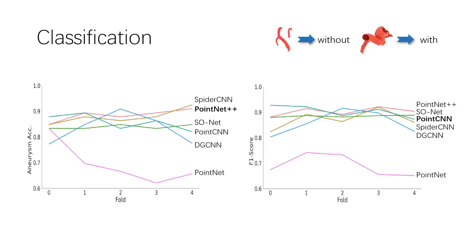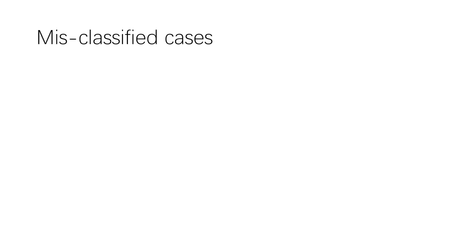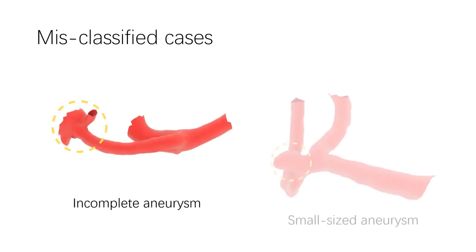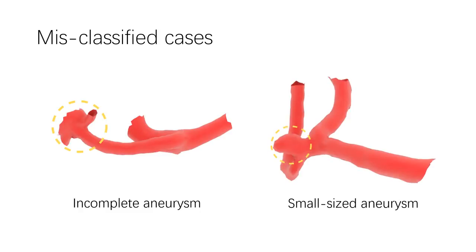We selected 6 methods for binary classification benchmarks, including PointNet, PointNet++, PointCNN, SpiderCNN, Sonnet, and DGCNN. PointNet++ has the highest accuracy of aneurysms, and PointCNN has the greatest accuracy of artery and F1 score. Although the accuracy of classification is high, the fragments containing incomplete or small-sized aneurysms are hard to distinguish from healthy blood vessels.